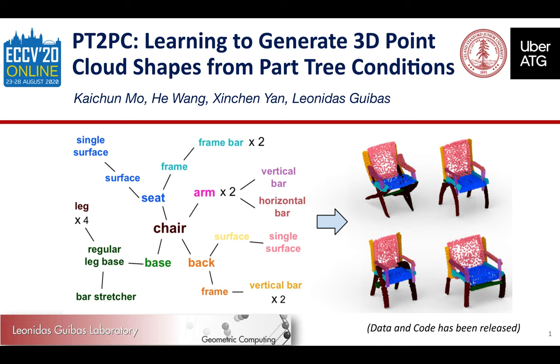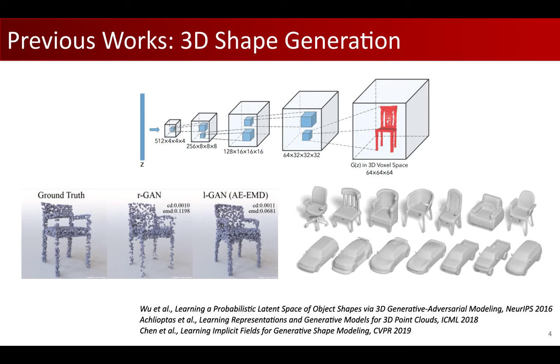This is a joint work with He Wang, Xin Chen Yan, and my advisor, Professor Leonidas Guibas. In this paper, we formulate a novel 3D shape conditional generation task, Part Tree to Point Cloud, PT2PC, which takes a symbolic part tree representing certain shape structure as input, and generates multiple 3D point cloud shapes with geometric variations that satisfy the shape structure requirement as output.